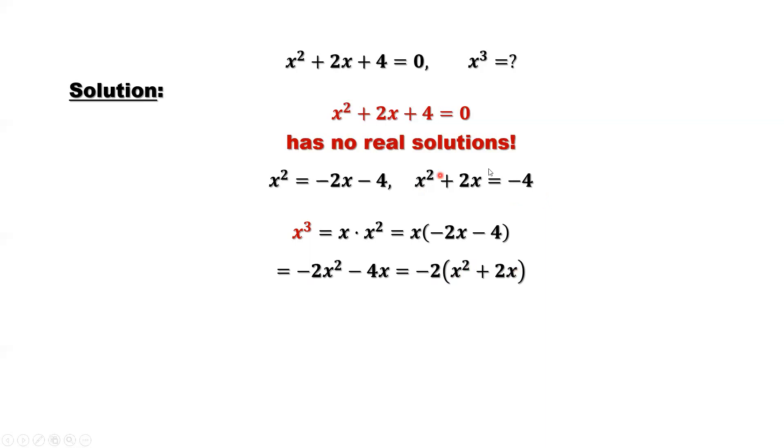From the second result, we can see the inside part is negative 4. Replace this part by negative 4. Negative 2 times negative 4, which is 8. 8 is the answer for x cubed.